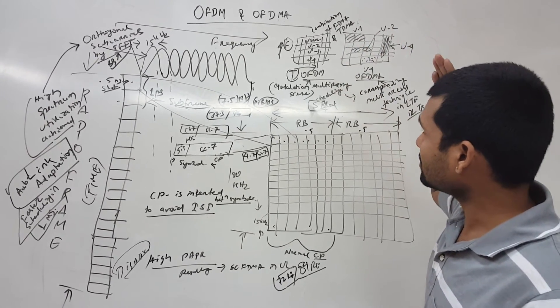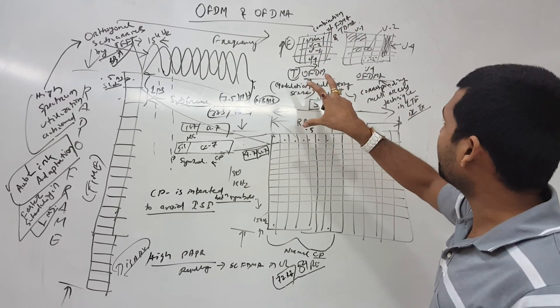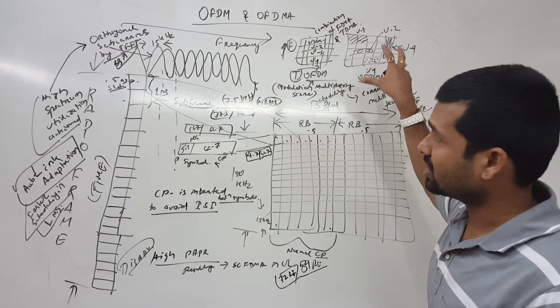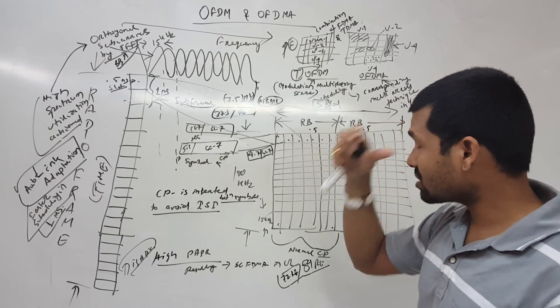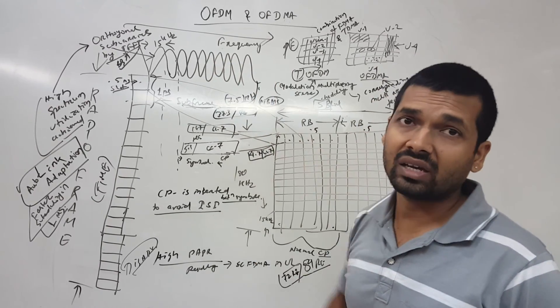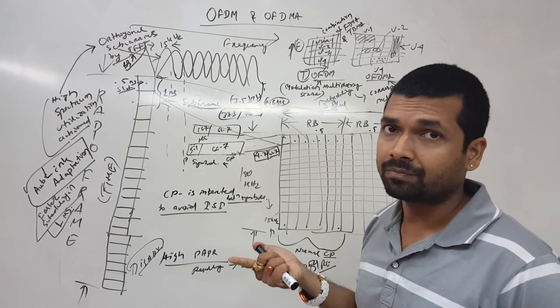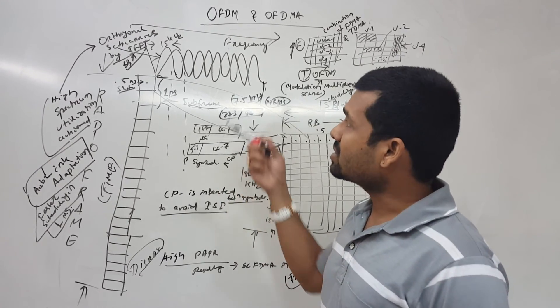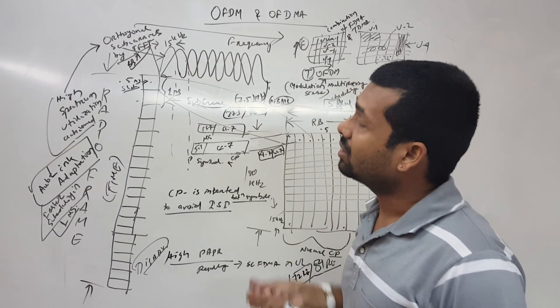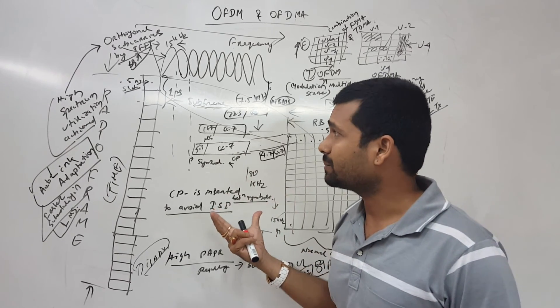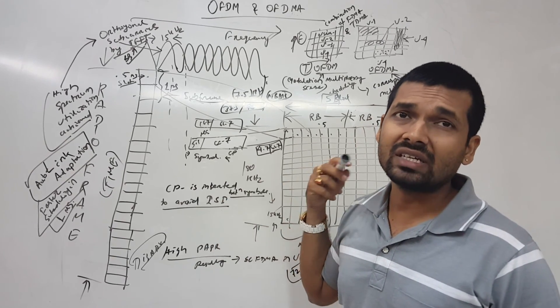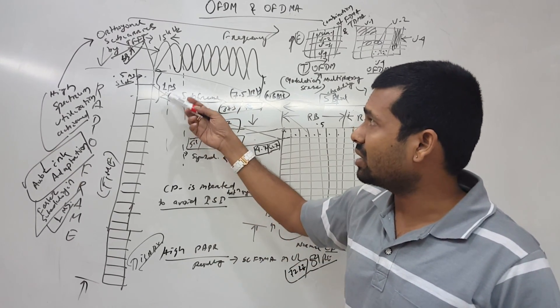OFDMA is the modulation multiplexing scheme, and this scheme correspondingly we have used in the downlink of LTE as a multiple access technique. What are the advantages of OFDMA? One is we are having orthogonal subcarriers which is achieved by IFFT operations in the baseband. We will be seeing what is IFFT in the future classes. Secondly, due to the 15 kHz subcarrier, we are having better spectral efficiency and better utilization of the spectrum. Thirdly, we have auto link adaptation, so we do adapt links every 1 millisecond.